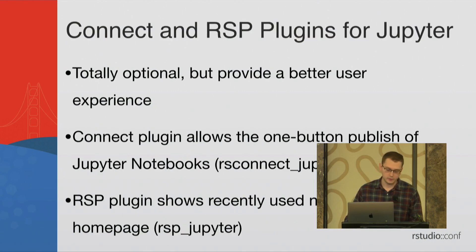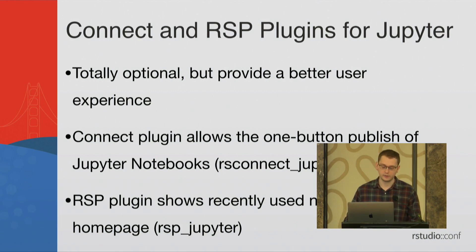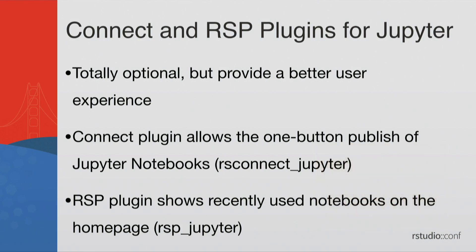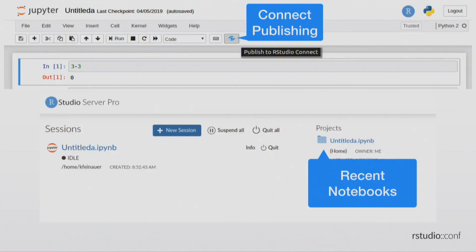There are two optional plugins we provide for Jupyter to help with the user experience — I recommend having both installed. The first is the RSConnect Jupyter plugin, which enables publishing notebooks to Connect. The second is the RSP plugin, which shows notebooks on the RStudio Server Pro homepage. At the top you'll see the Connect Publishing button, and at the bottom of the homepage you'll see your recently used notebooks.